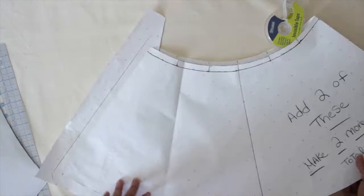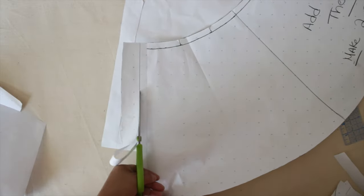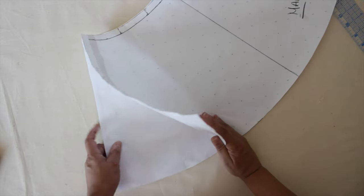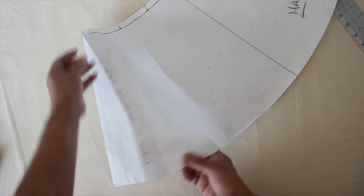The next step is your seam allowance. I added some paper to both sides, then I put a half inch. The reason why I don't put the seam allowance at the beginning is because I don't want it to mess up the math for the pleats. So I always do it after I calculate for the panels.